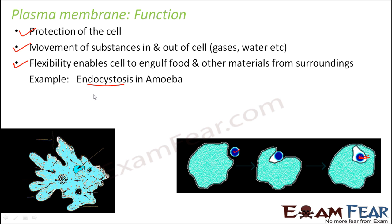With this we will end our discussion on plasma membrane. The concept of plasma membrane or cell membrane should now be clear — this plasma membrane is found in all types of cells, whether plant cells or animal cells. In fact, when we talk about prokaryotes, you will also see that plasma membrane is present there.